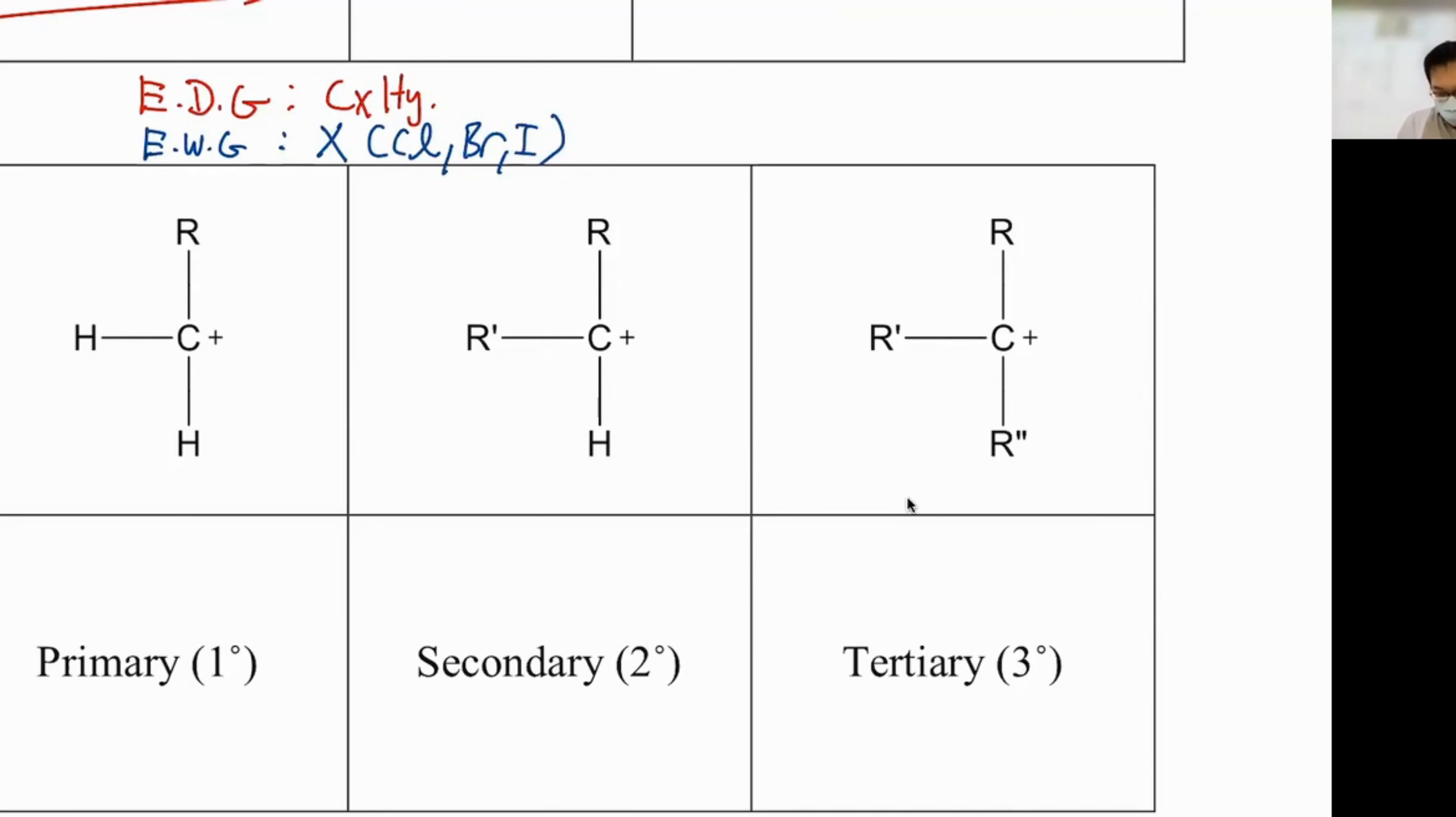So right now we have primary, secondary, and tertiary. You can see that this is an R group. R group in general is CxHy. I donate once. This R group donates twice. This R group donates three times.